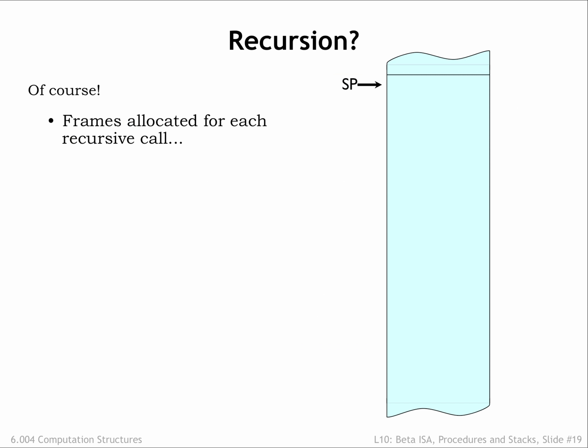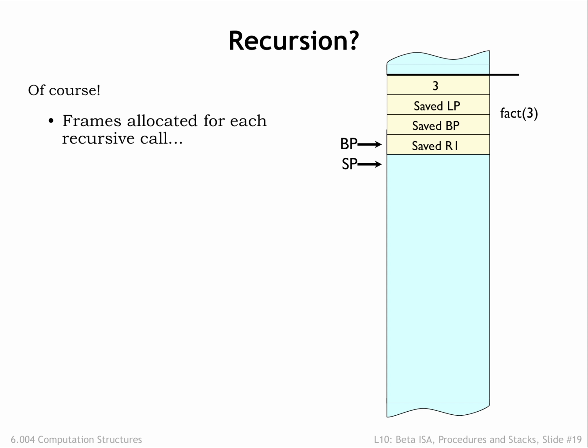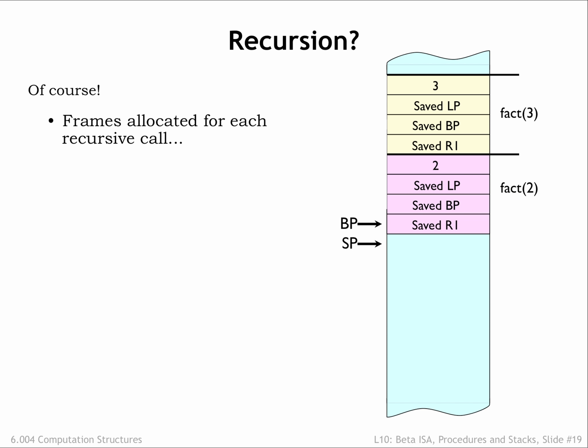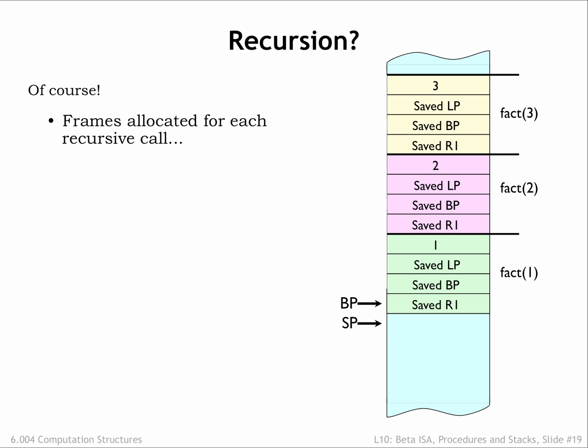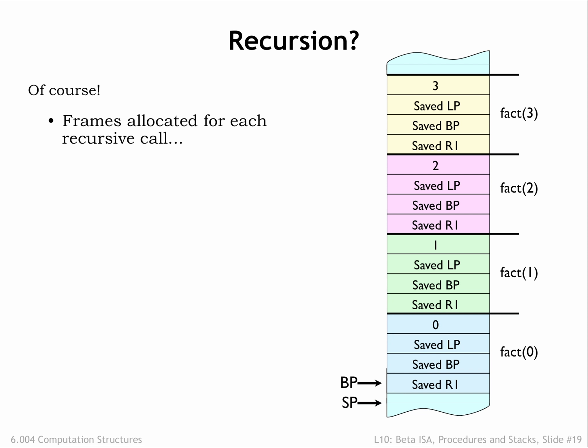So have we solved the activation record storage issue for recursive procedures? Yes! A new stack frame is allocated for each procedure call. In each frame we see the storage for the argument and return address. And as the nested calls return, the stack frames will be deallocated in inverse order.